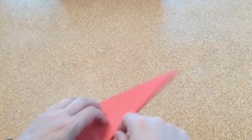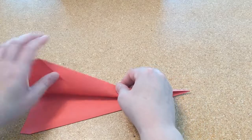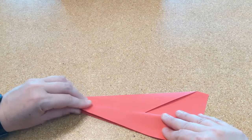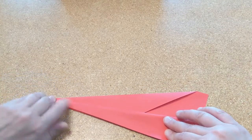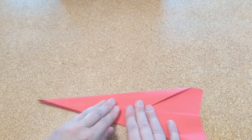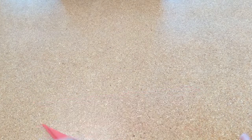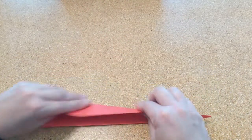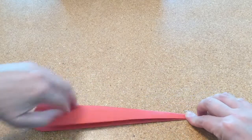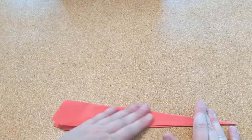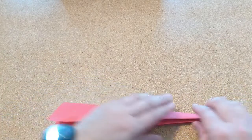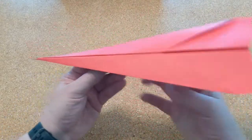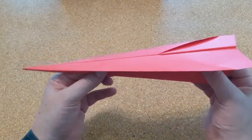Finally you're going to fold back one side to the edge like this. And then flip your plane over and do the same thing to the other side. Make sure all of your creases are good and tight and then open it up and your plane is ready to fly.